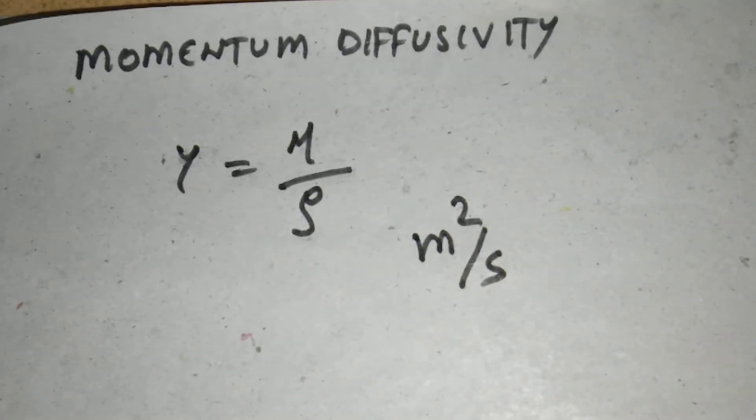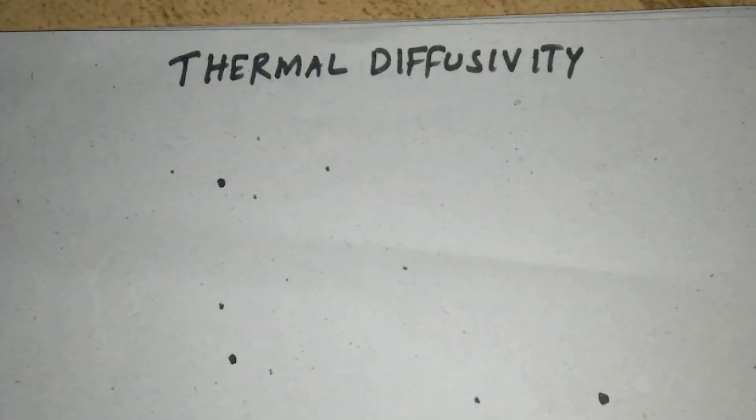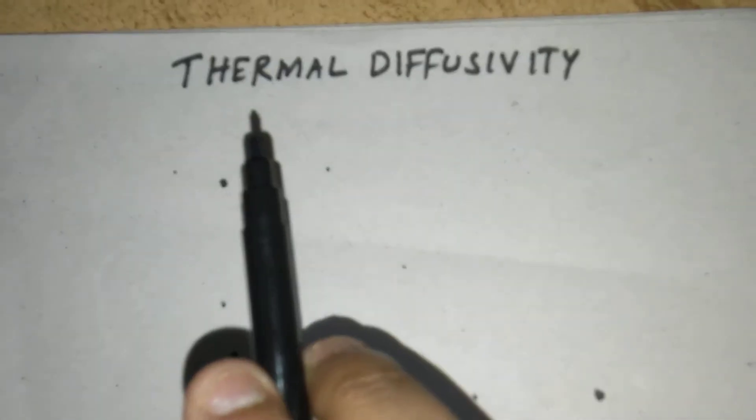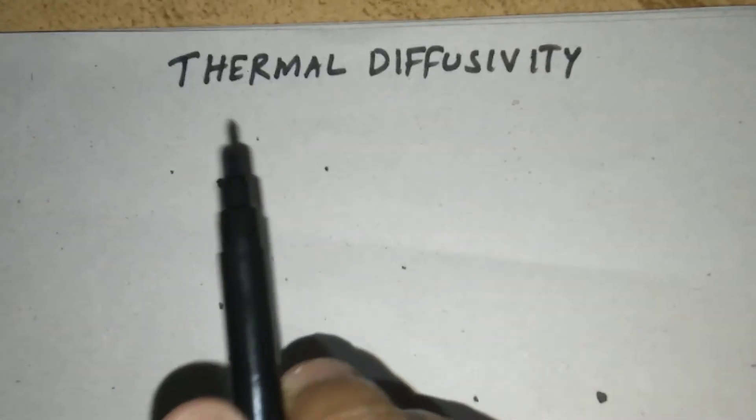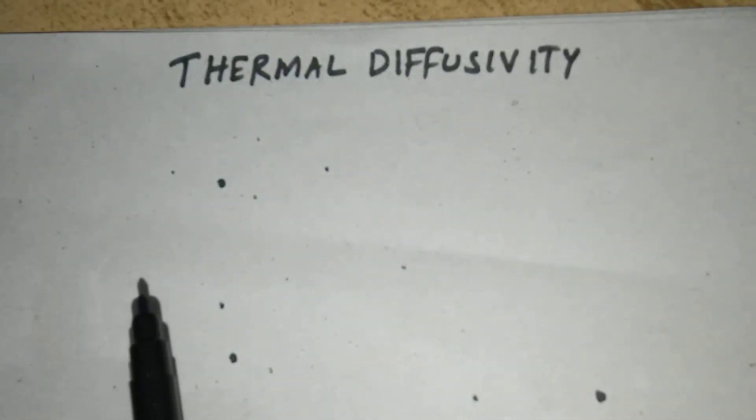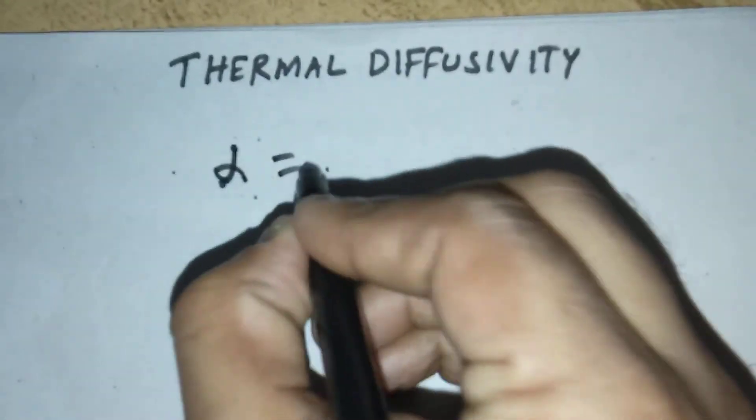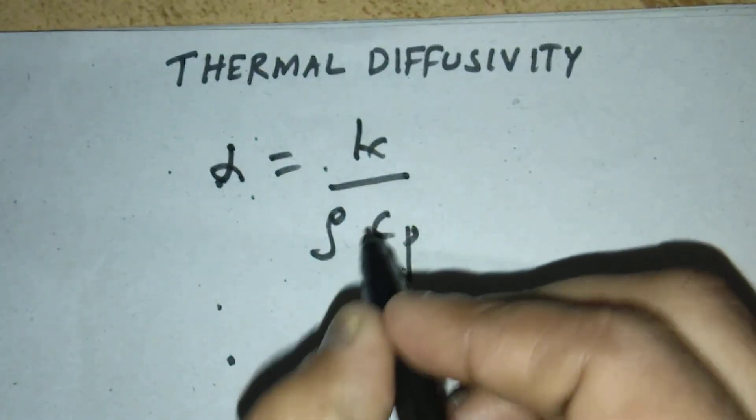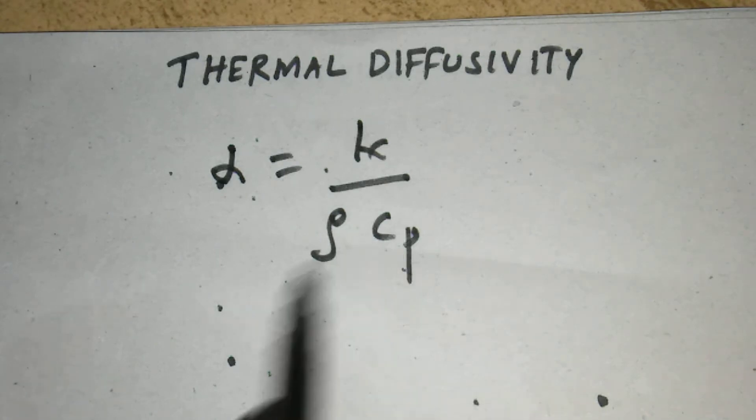Now let us discuss what is thermal diffusivity. It is the measure of how fast heat will transfer or how fast heat propagates in a system. It is represented as thermal diffusivity alpha equals K divided by rho Cp. K is thermal conductivity, rho is the density, Cp is specific heat capacity.